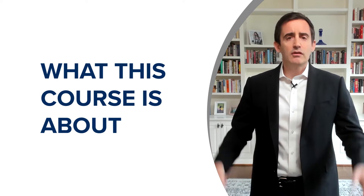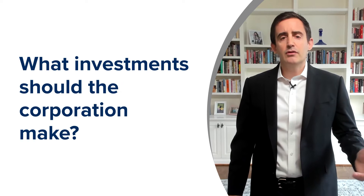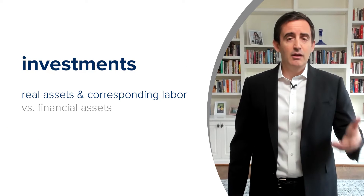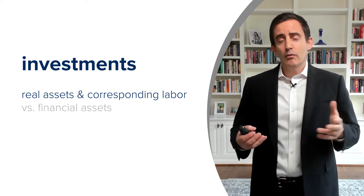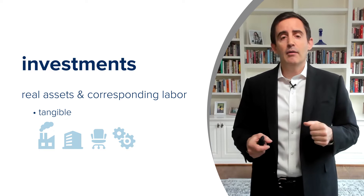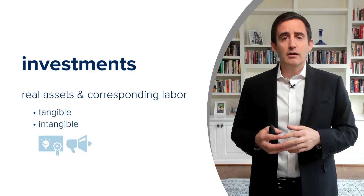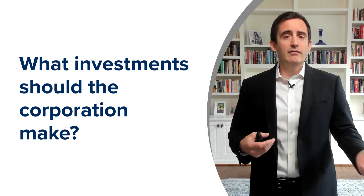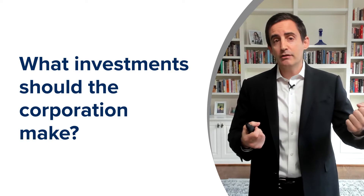To start off, this course is largely concerned with answering two really big picture questions. The first question is: what investments should a corporation make? We're talking about investment in real assets as opposed to financial assets. Financial assets are things like stocks, bonds, and derivatives — assets that just have claims on other things. Real assets include tangible assets like a factory, real estate, furniture, or machinery, and also intangible assets like investing in R&D to generate patents, or investing in marketing to increase your brand name. A corporation faces different types of investment decisions and needs to figure out what to invest in and what not to invest in, and a big part of this course is developing analytical tools to help guide those decisions.